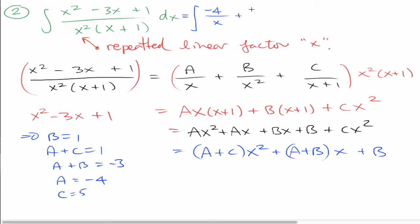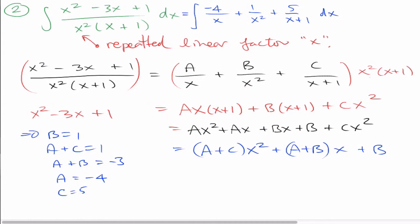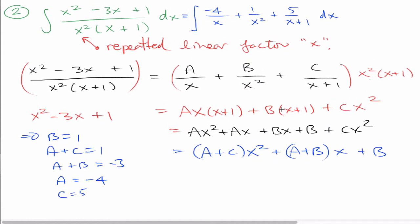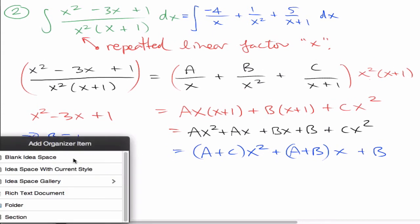This tells me that this integral can be written as the integral of negative 4 over x plus 1 over x squared plus 5 over x plus 1. Each of these is easily integrated: this gives negative 4 ln absolute value of x, then negative 1 over x, and then 5 times ln absolute value of x plus 1. We've turned this problem into a simple integration, just using some arithmetic.